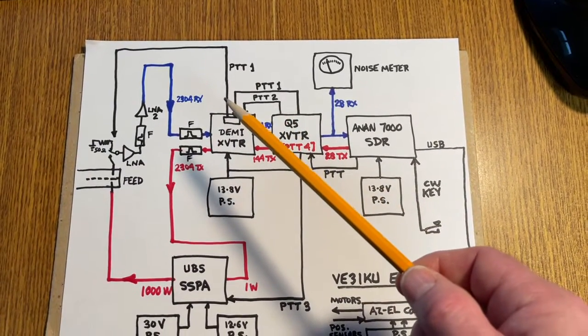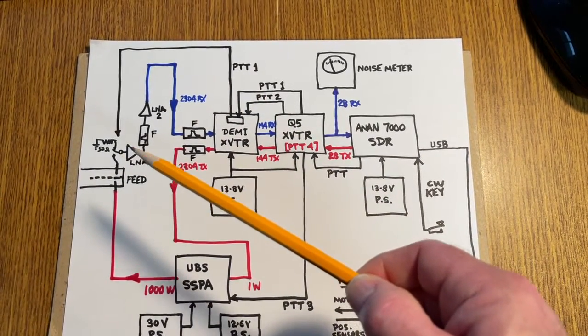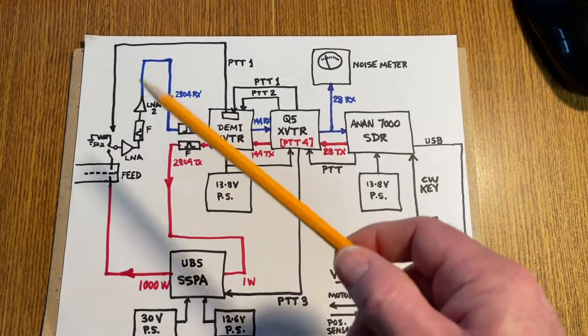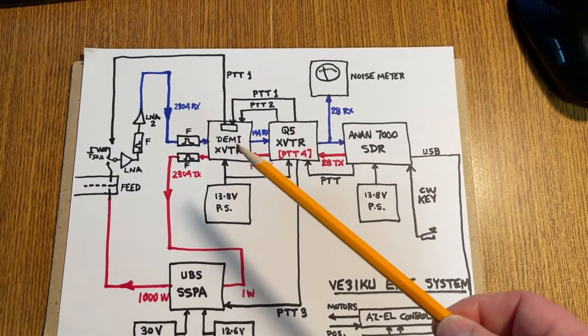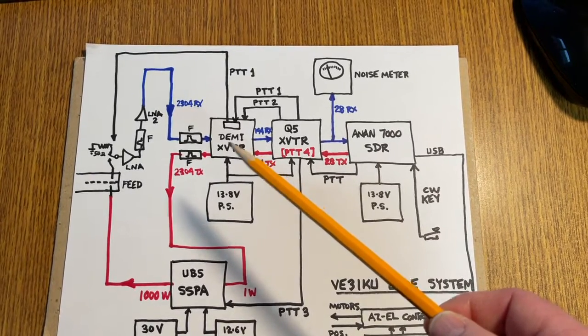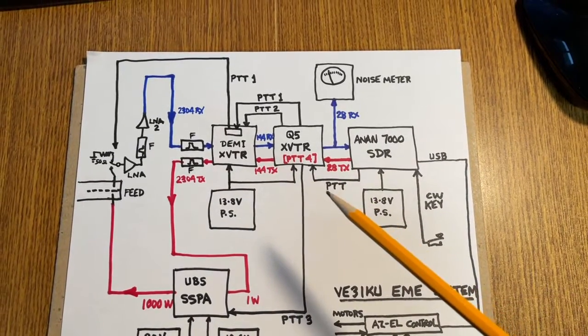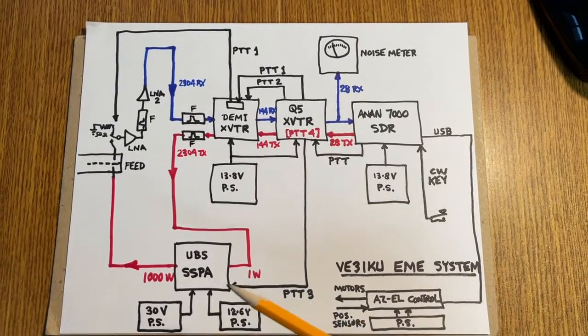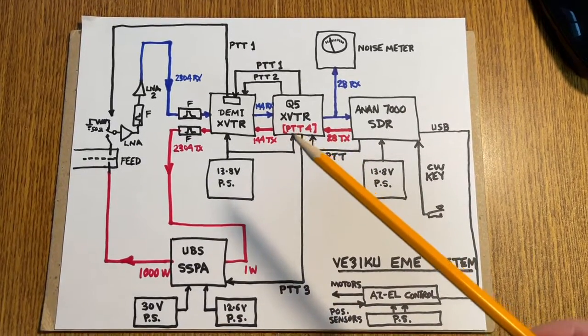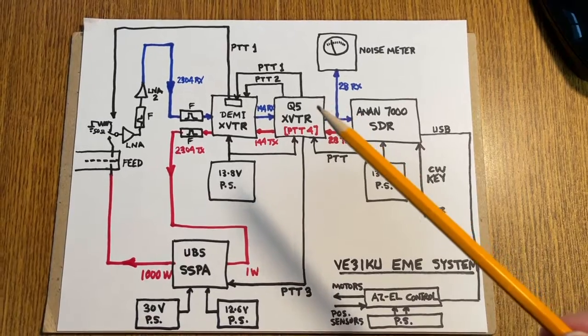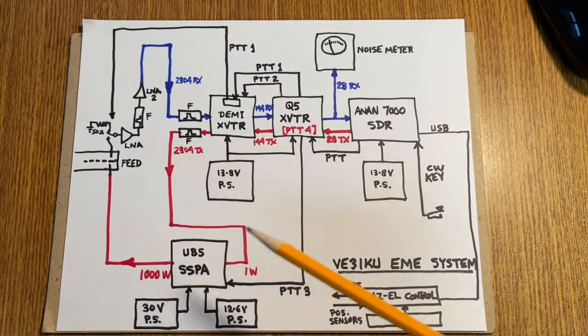So during transmit, that voltage drops to zero, disabling the low-noise amplifier power supply and removing the input from the feed. The second step of the sequencer turns on the DEM transverter from receive to transmit to enable this red port path. The third part of the sequencer turns on the solid-state power amplifier bias. And the fourth step of the sequencer enables the Q5 signal transverter itself to pass RF from the ANAN through to the PA and out to the horn.